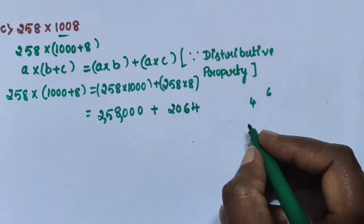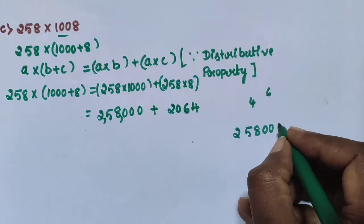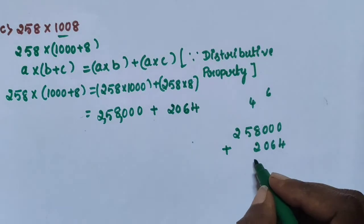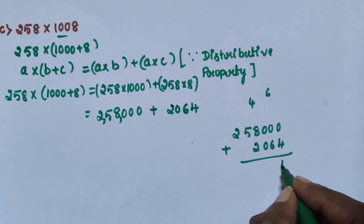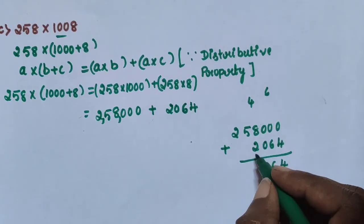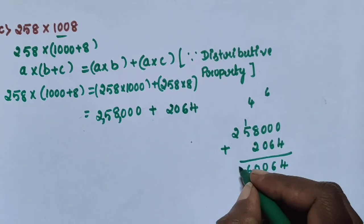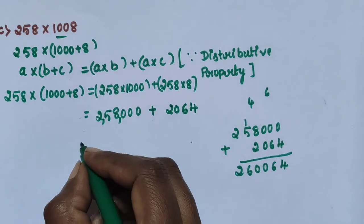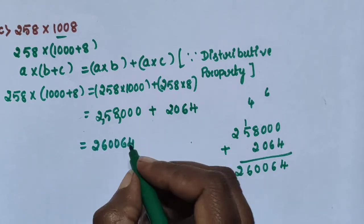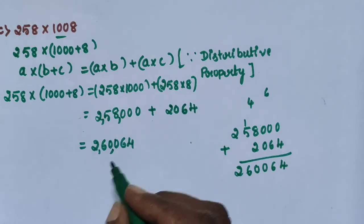Add these two numbers: 258,000 plus 2,064. 0 plus 4 is 4; 0 plus 6 is 6; 0 plus 0 is 0; 8 plus 2 is 10, write 0 carry 1; 1 plus 5 is 6; 2 remains. The answer is 2,60,064.